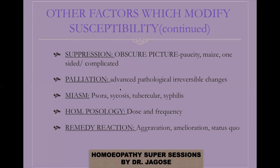In palliation, which is done in cases where pathology has advanced with end-organ damage that cannot be reversed, susceptibility is generally low. We only get pathological symptoms that are common in nature, indicative of the diagnosis of the disease, and these do not help us to diagnose the homeopathic medicine based on qualitative totality. Therefore, in such cases we can only do palliation.